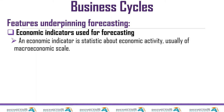An economic indicator is a statistic about economic activity — and statistics are numbers. The main measure we use for economic activity is real GDP, which is the total market value of all final goods and services produced within the borders of a country over a specific period of time, usually a year.